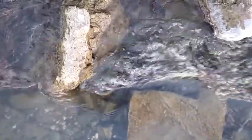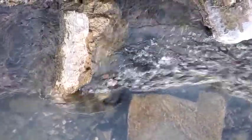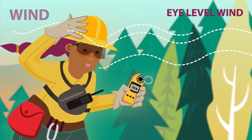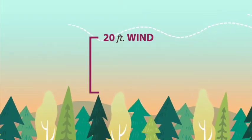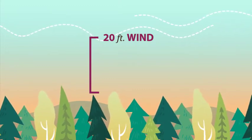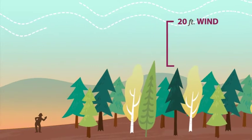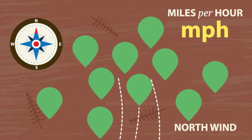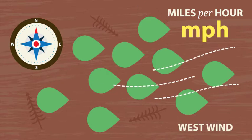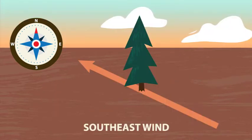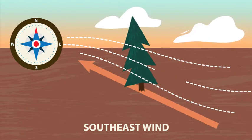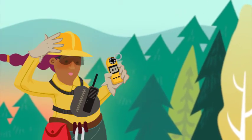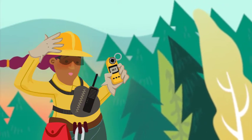Wind funnels and channels around the terrain just like water flows around a rock in a stream. Within the forecast, the wind is either specified as the 20-foot wind or the eye-level wind. The 20-foot wind is the average wind found 20 feet above any vegetation and can be as much as two times higher than the eye-level wind, depending on vegetation and terrain. Wind speed is given in miles per hour and wind direction is reported as the direction from which it is blowing — for example, a southeast wind is blowing from the southeast to the northwest.